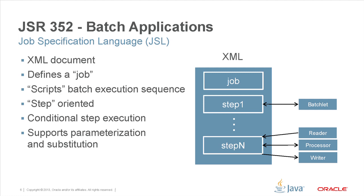Jobs are typically organized as a set of steps. Steps describe the sequence of events that need to take place in a job — for example, download a file as input, and in the next step process all the items in that file. JSL also provides conditional step execution so that, for example, if step one completes successfully execute step two, but if step one fails perform cleanup step three. Additionally, JSL supports parameterization and substitution so that JSL definitions can be used as templates and applied across a spectrum of processing needs.